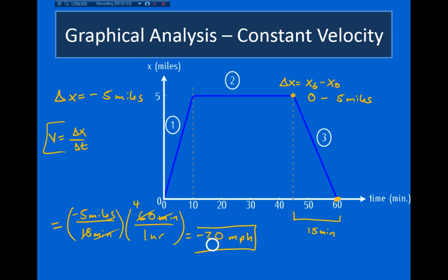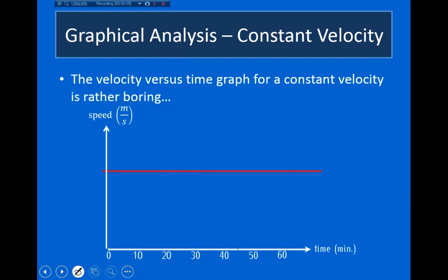Notice that the velocity here is negative. Remember, velocity is equal to the slope. Looking at this graph, we can see the slope is in fact negative — the value of my position is decreasing in time. Now, what if I plot the velocity versus time graph? Well, if my velocity is constant, the y-value is never changing, so it's not a very interesting graph. It's just a constant line, a constant value for y.